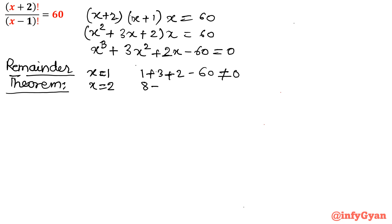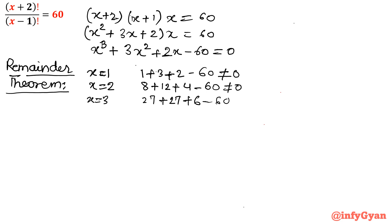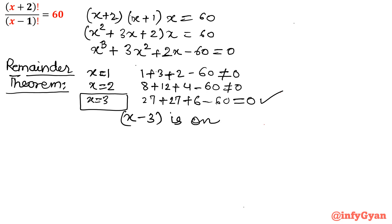Let me try x = 2: 2³ = 8, 3 times 2² = 12, plus 4 — not equal to 0. Let me put x = 3: 3³ = 27, 3 times 3² = 27, 3 times 2 = 6, minus 60. So 27 + 27 + 6 - 60 = 60 - 60 = 0. Yes, it is equal to 0. That means x = 3 is our solution, so (x - 3) is one factor of our cubic equation.